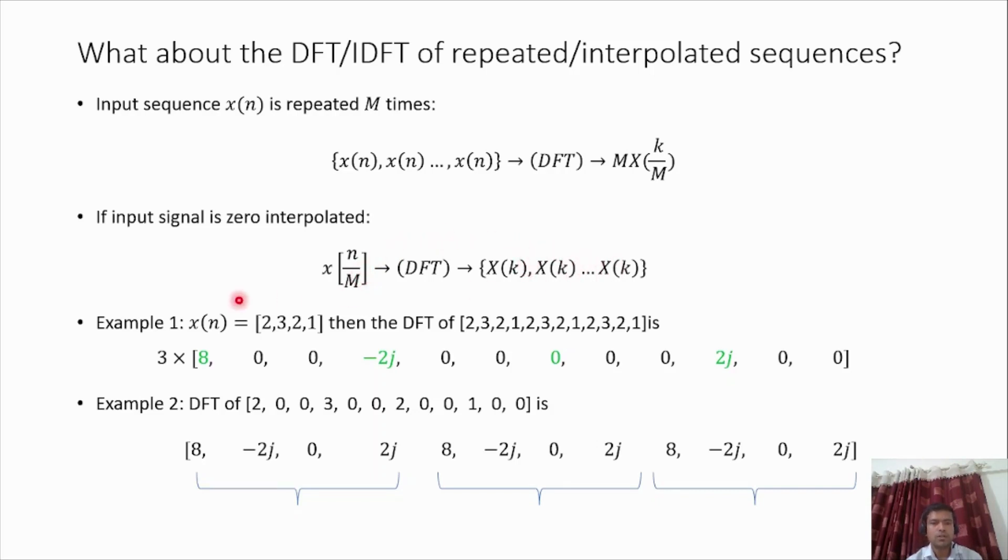Let's discuss this using examples. This is Example 1, where x[n] = [2, 3, 2, 1], and we have to calculate the DFT of this sequence where x[n] is repeated three times. The simple and easier way is to calculate the DFT of [2, 3, 2, 1] itself instead of calculating the DFT of the entire big sequence.